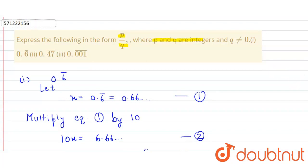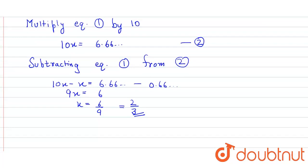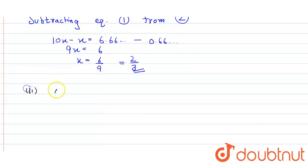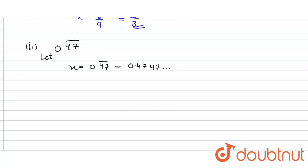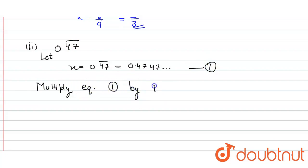In the second part, the irrational number we have to convert to the form p by q is 0.47 bar. So we let x equal to 0.47 bar, which is equal to 0.4747... to infinity. We consider this to be equation one, and then multiply equation one by 100.